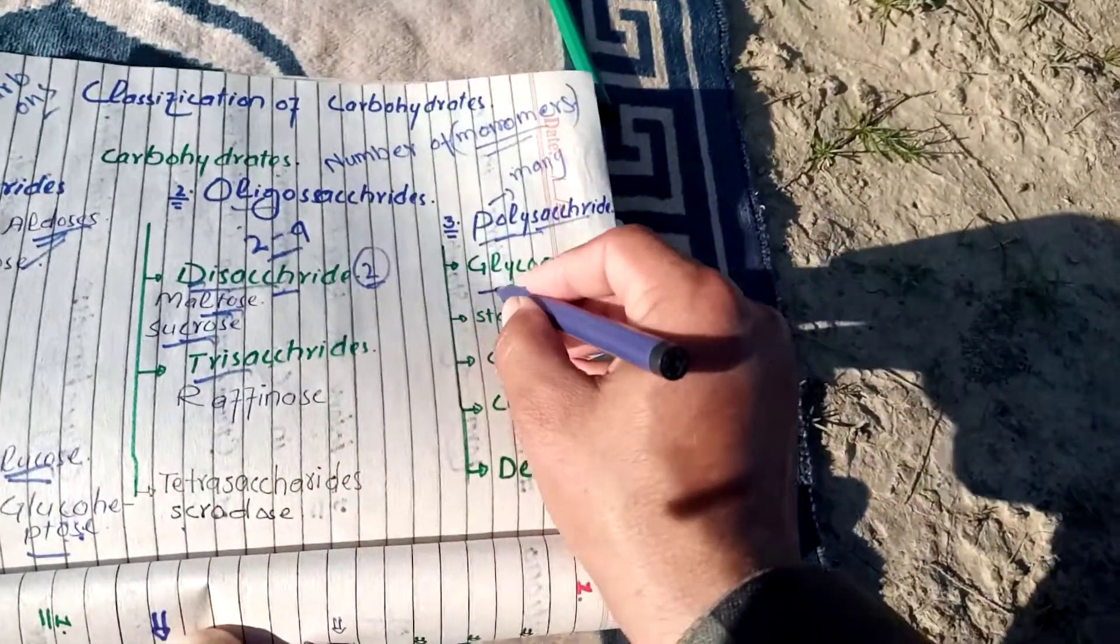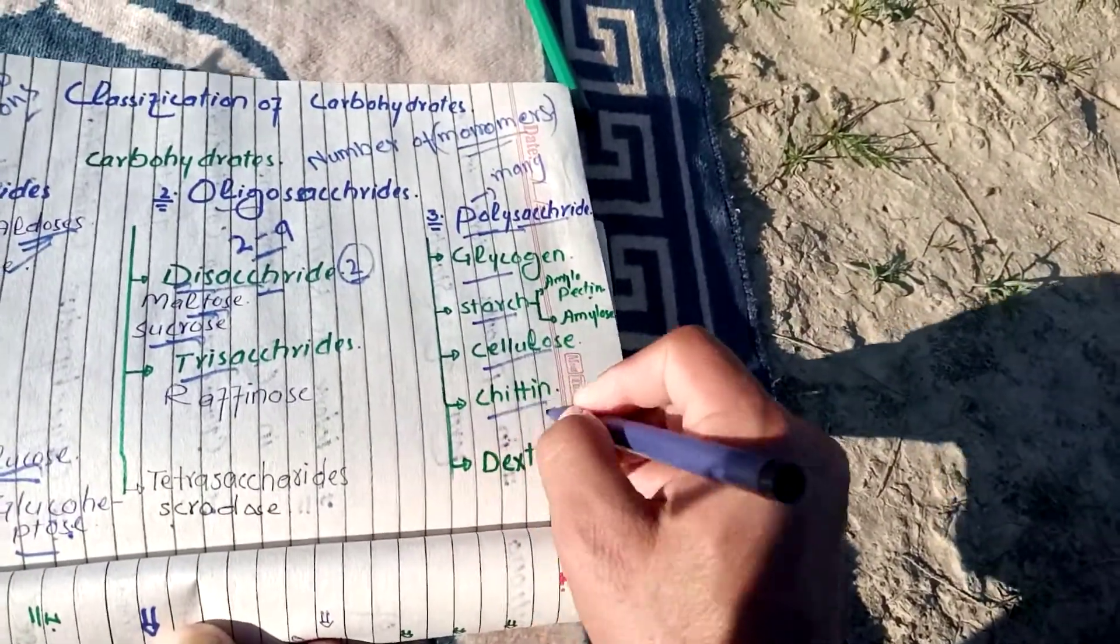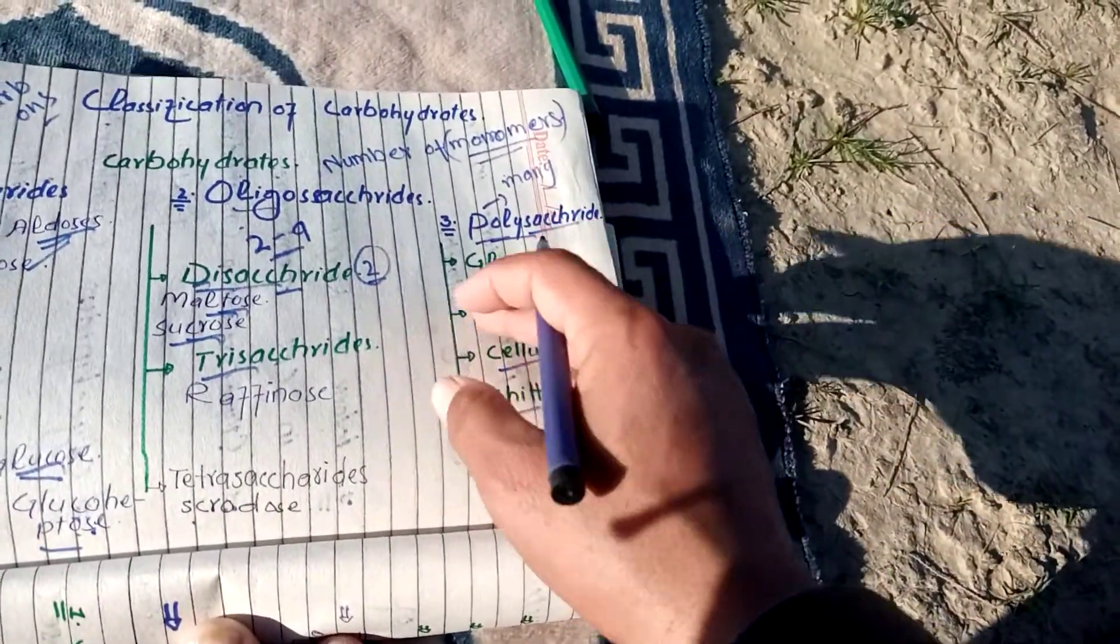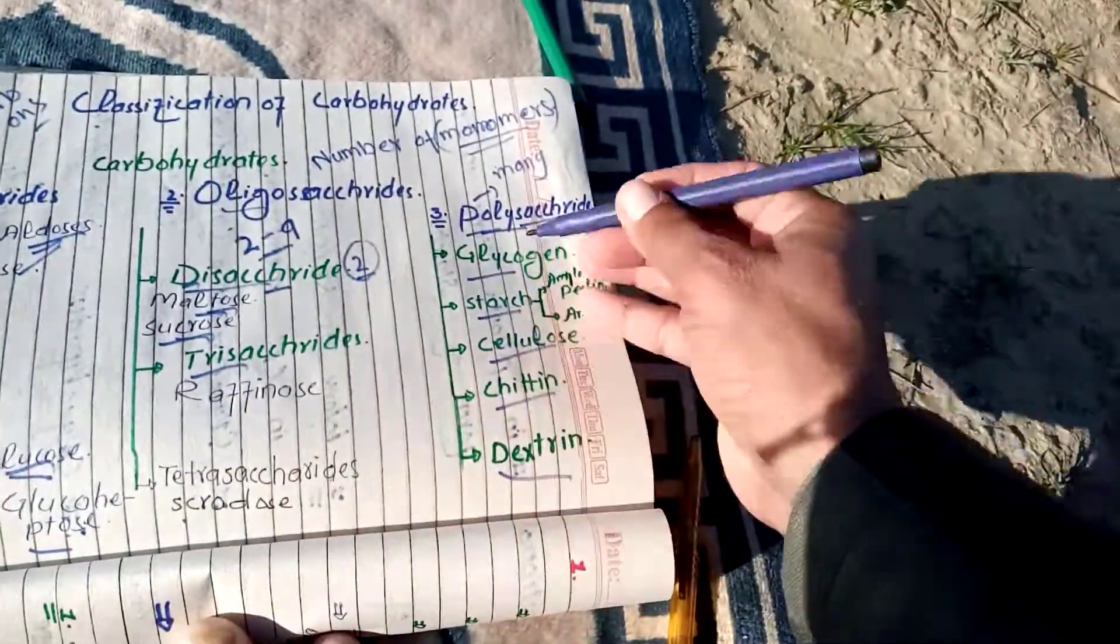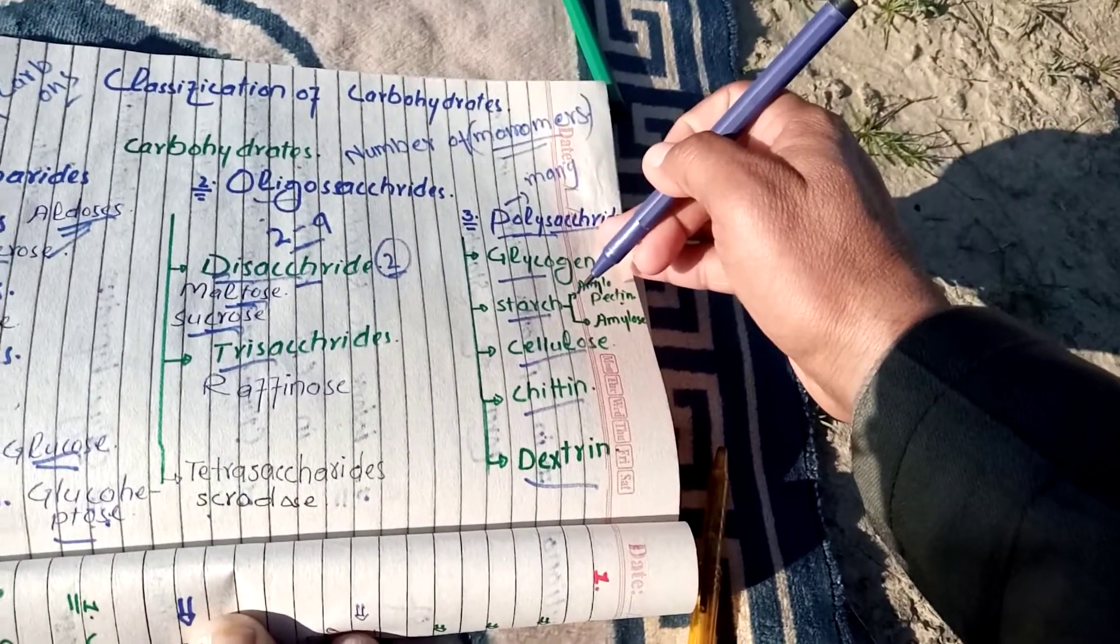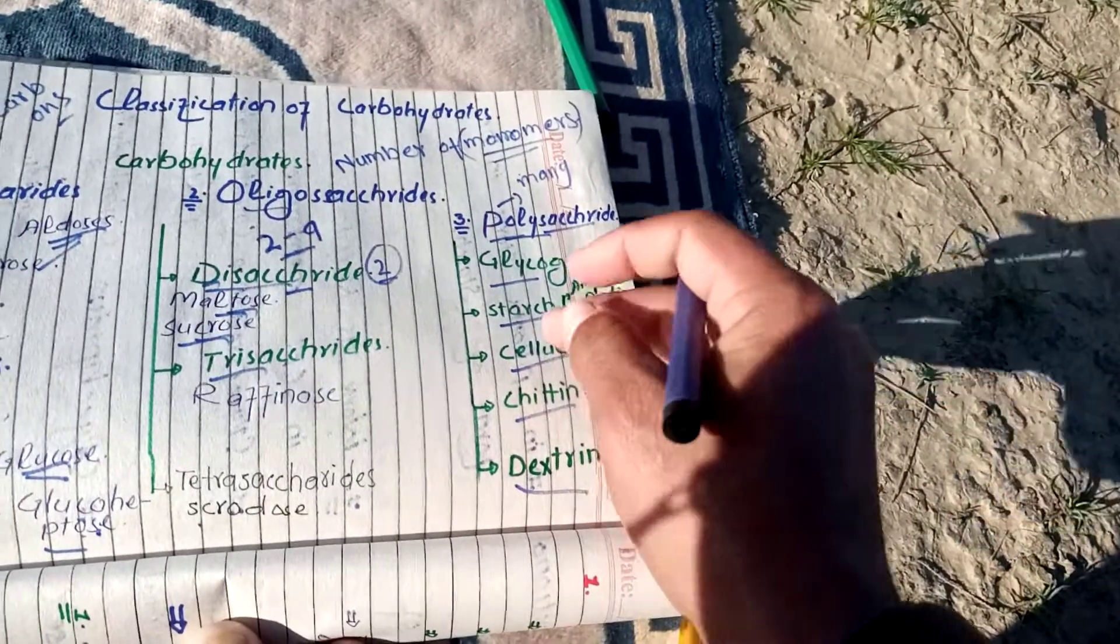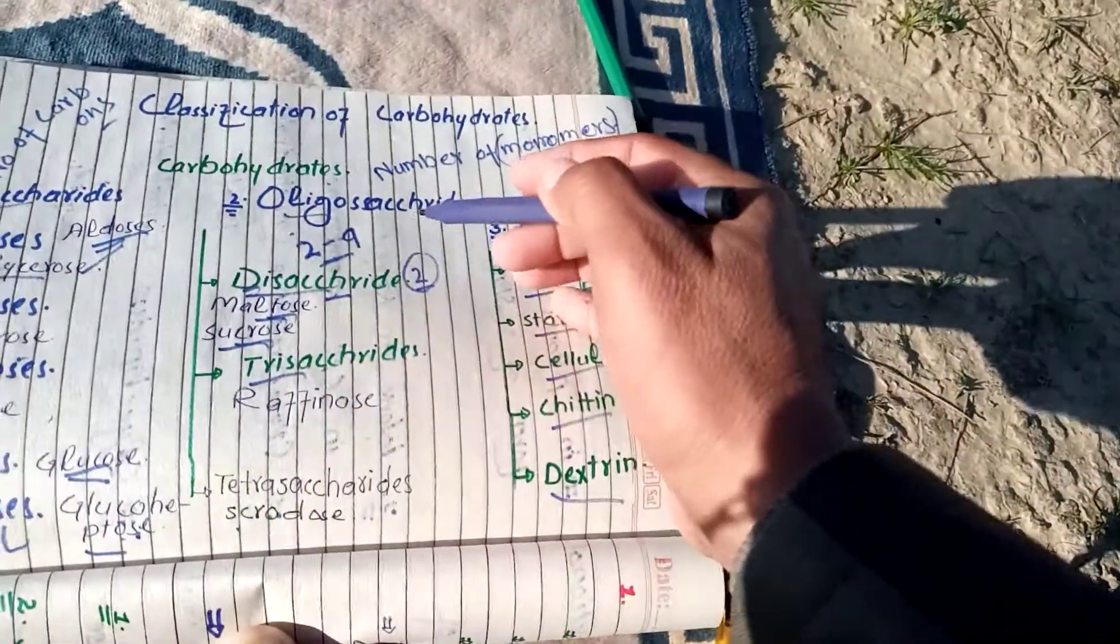Jo last mein hai polysaccharide. Poly ka matlab hai many. Aise carbohydrates jis mein now se onward, now se zyada monosaccharide milkar banta hai, aise carbohydrates polysaccharide kehlata hai. For example glycogen, starch, cellulose, chitin, dextrin, and amylose.